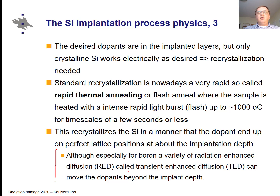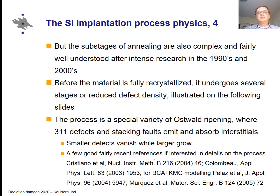After annealing you can also have defect-dopant migration, and especially for boron — one of the most important standard dopants in silicon — there is a special variety of radiation-enhanced diffusion called transient enhanced diffusion (TED). 'Transient' refers to it being a transient process during the annealing itself, while the defect concentration changes. This can move the dopants beyond the implant depth, and for a while this was a significant problem in how to handle the TED process so that boron doesn't go too deep.